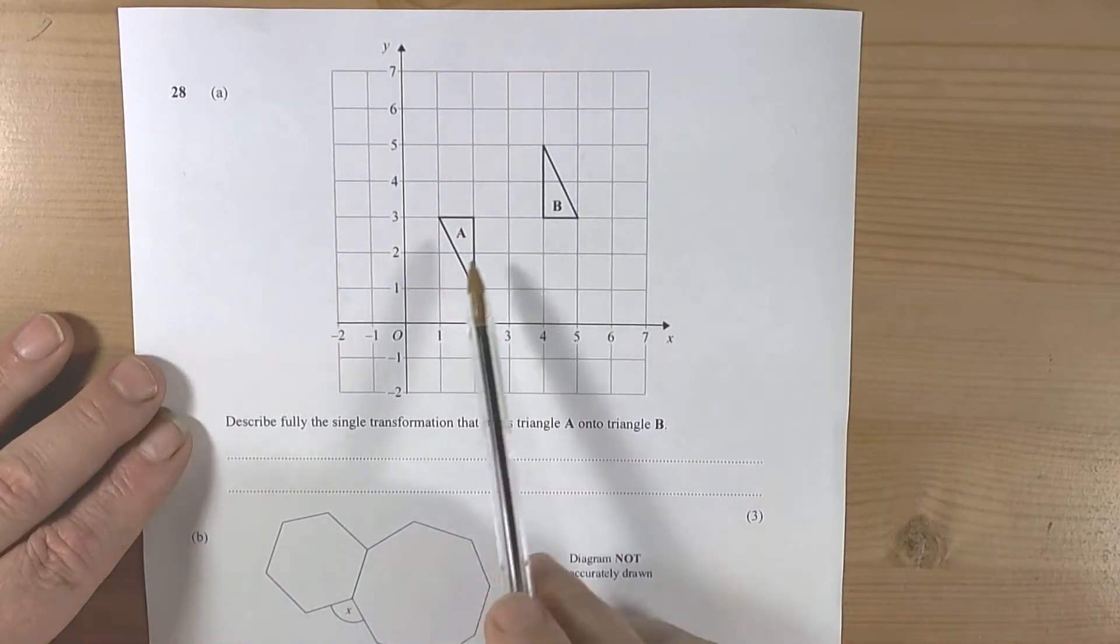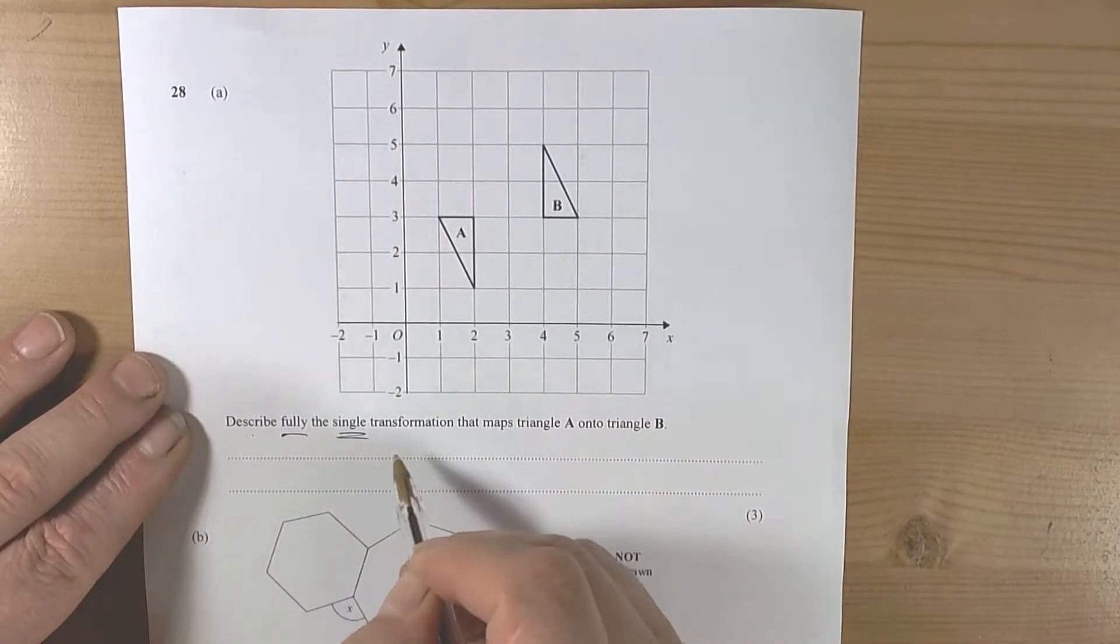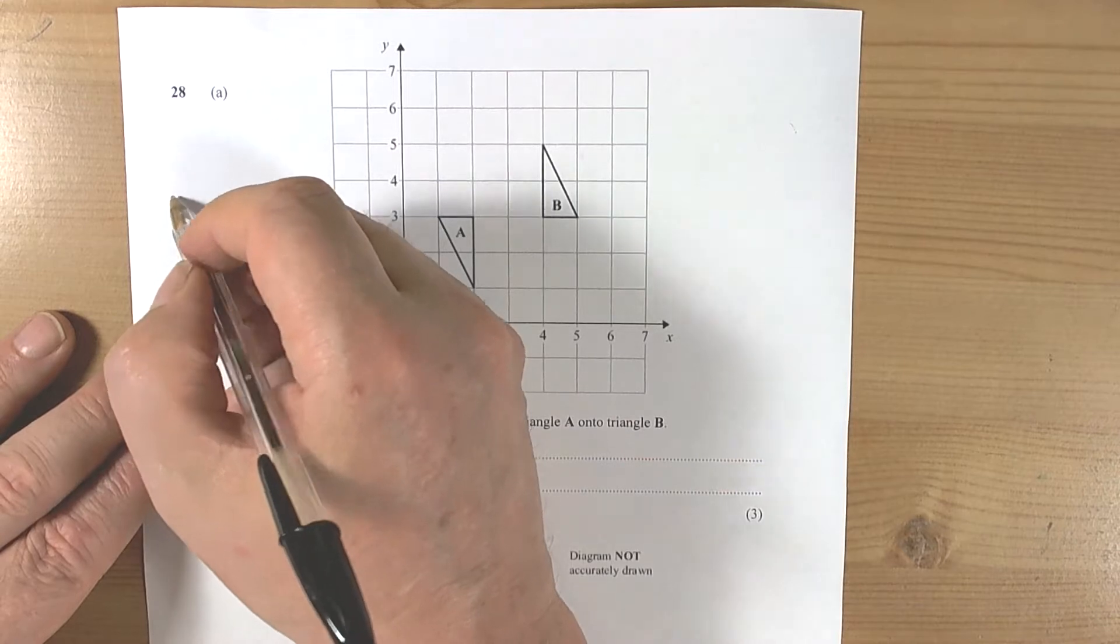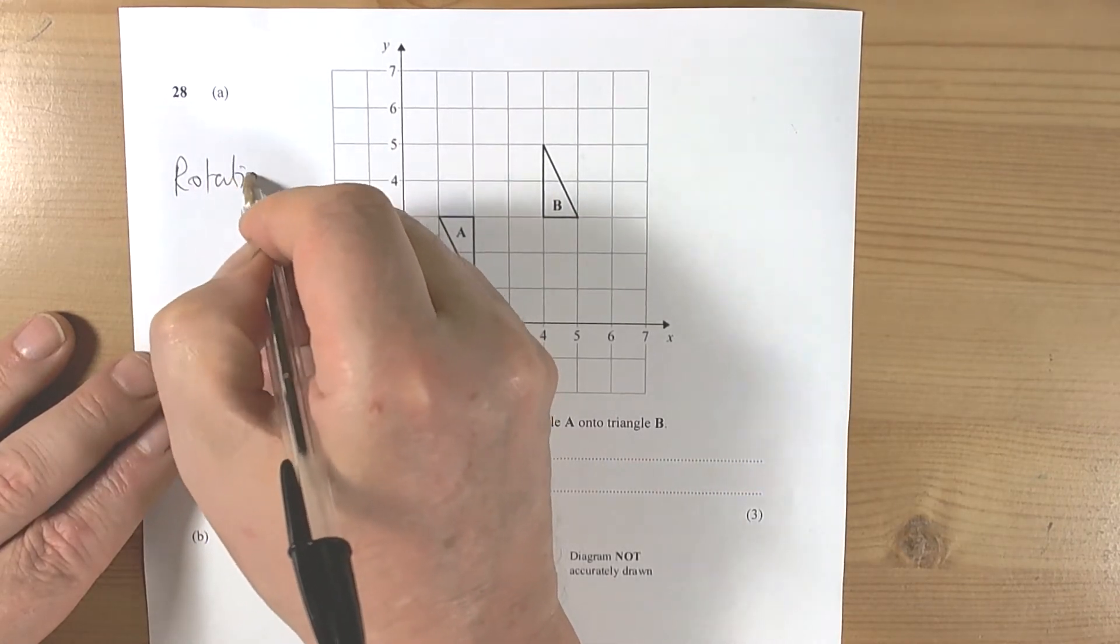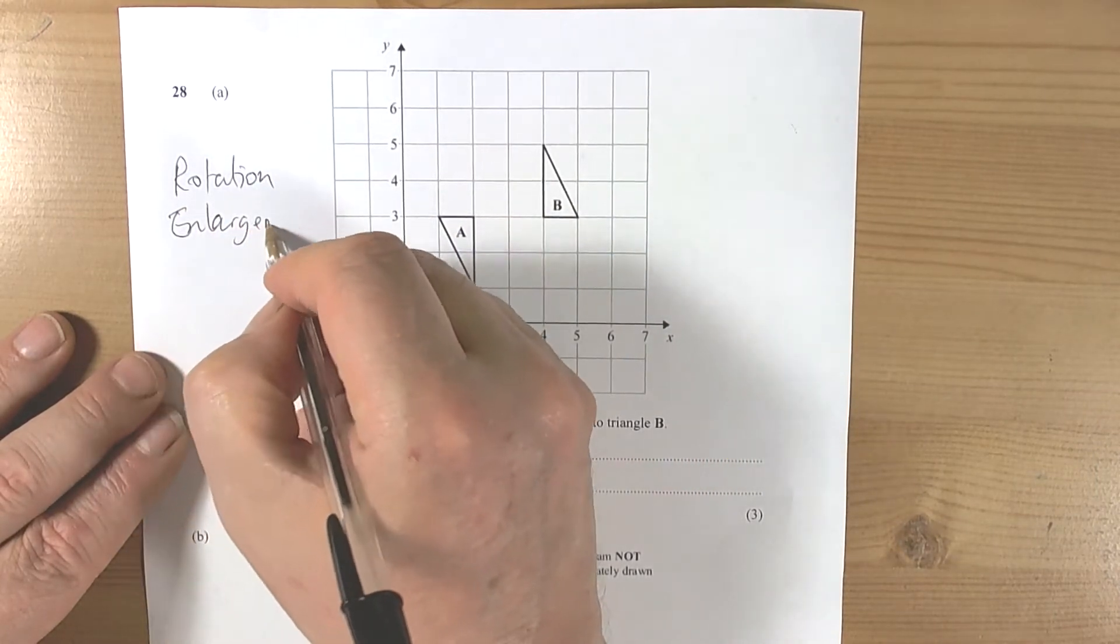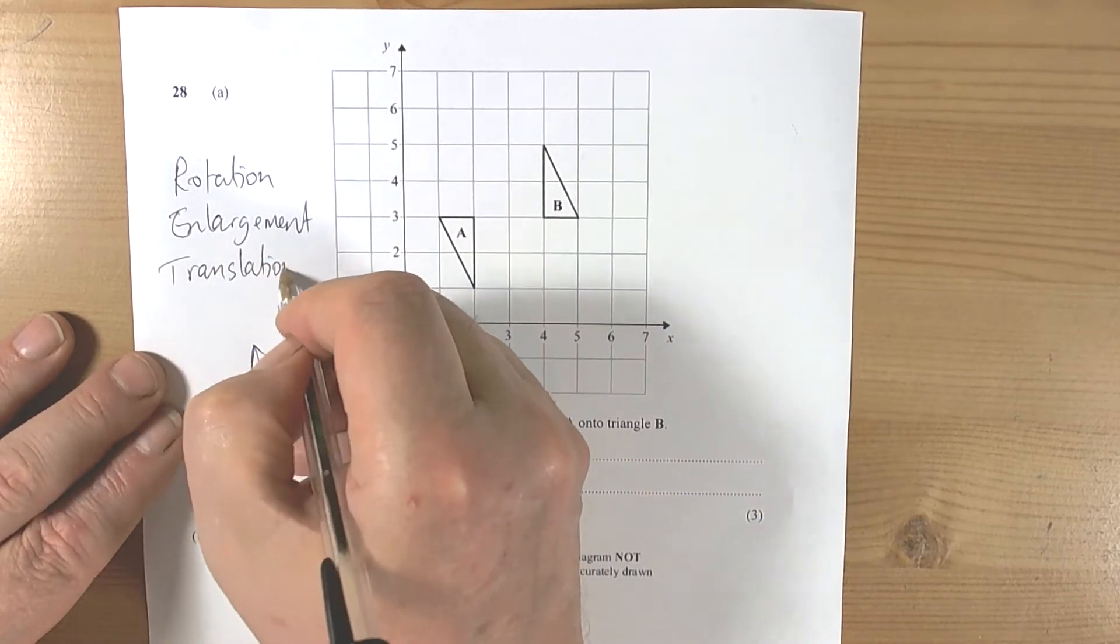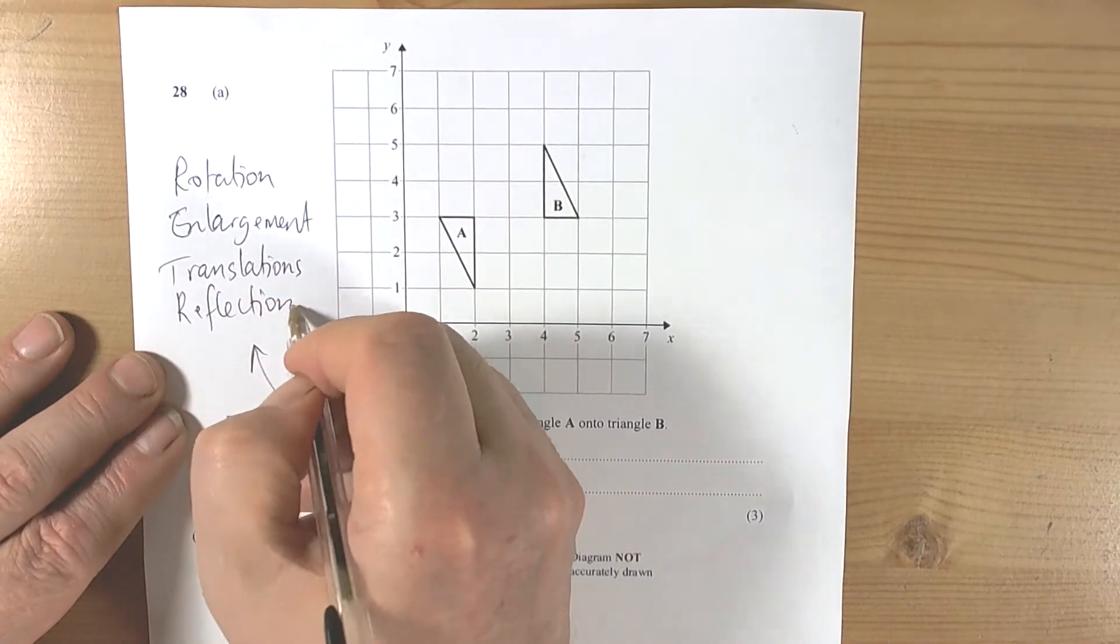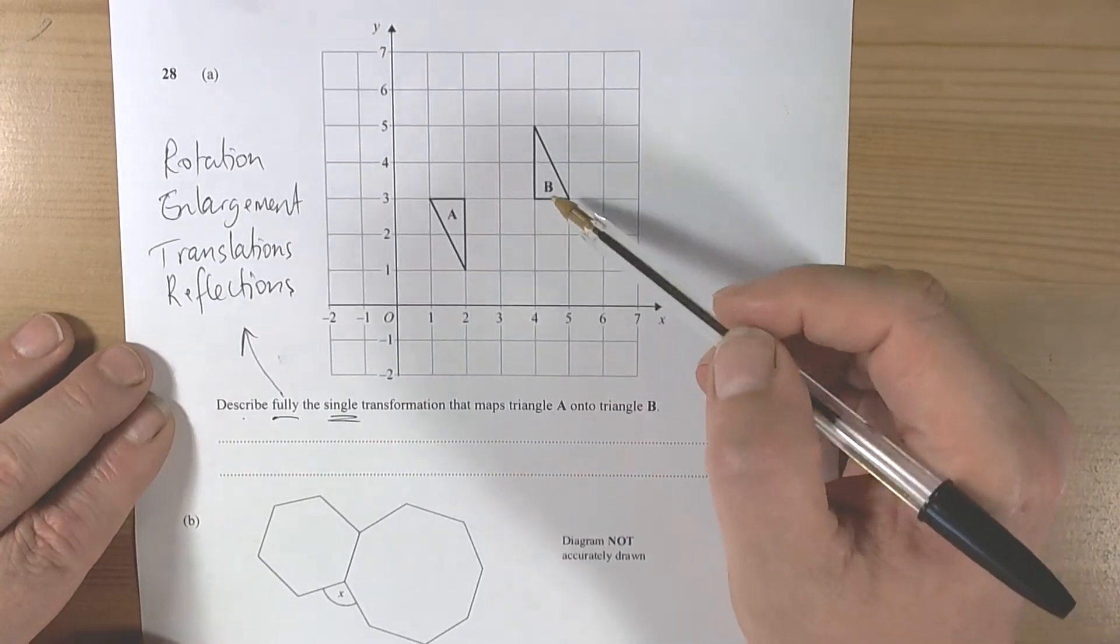We've got a transformation question here. It says describe fully the single transformation, so it's important to think about the four transformations possible at GCSE: rotations, enlargements, translations, or reflections. This could be one of those.